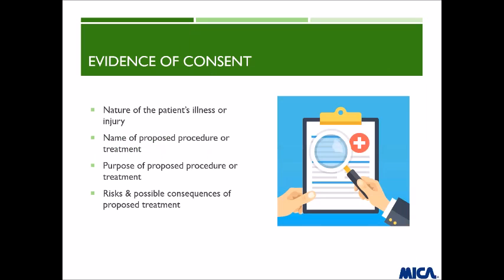Evidence of consent involves the nature of the patient's illness or injury, which should be clear on the consent form. You want the name of the proposed procedure or treatment — for example, an appendectomy — and the purpose of the proposed treatment or procedure, as well as the risks and possible consequences of the treatment. You also want to include the alternatives.